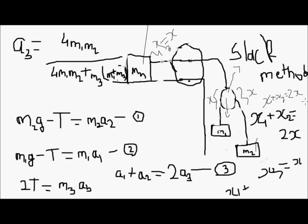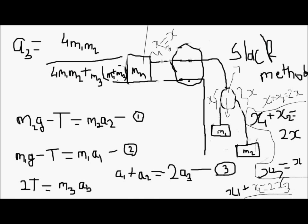From x1 plus x2 equals 2x and x3 equals x, we substitute to get the constraint relation: x1 plus x2 equals 2x3. If you differentiate twice you get the acceleration relation: a1 plus a2 equals 2a3.